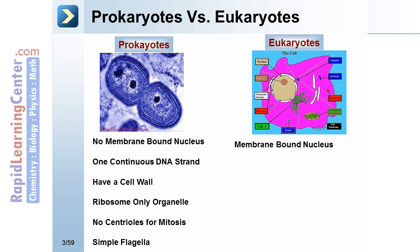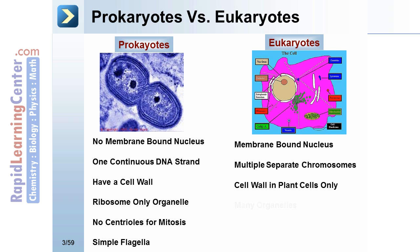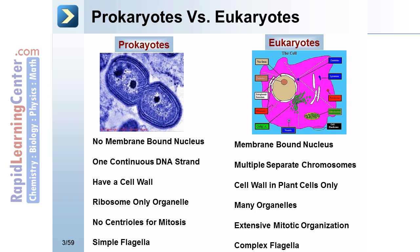Eukaryotes have a membrane-bound nucleus and multiple separate chromosomes. Cell wall is present in plant cells only. They have many organelles and extensive mitotic organization. And if a eukaryote has a flagella, it is a complex flagella.